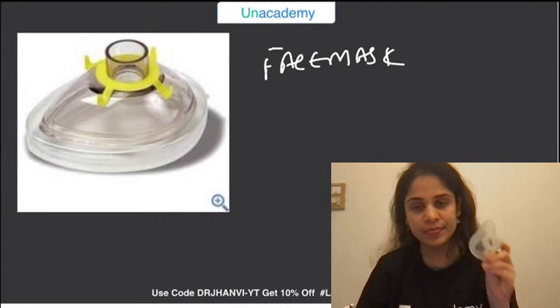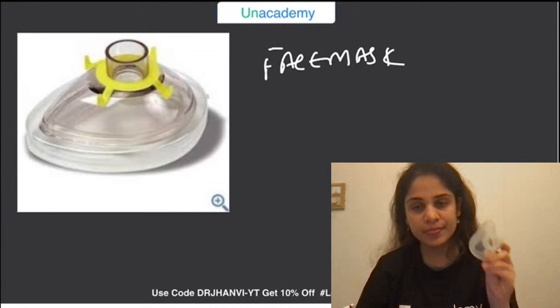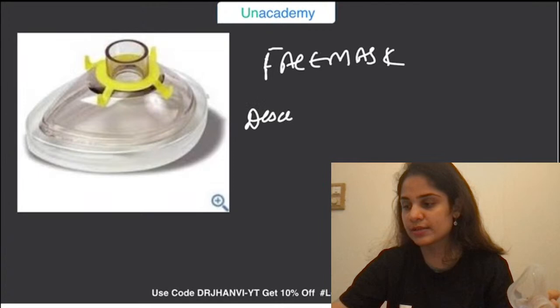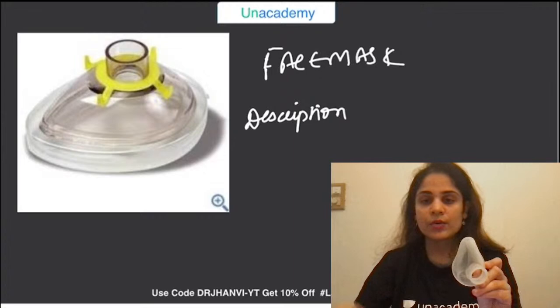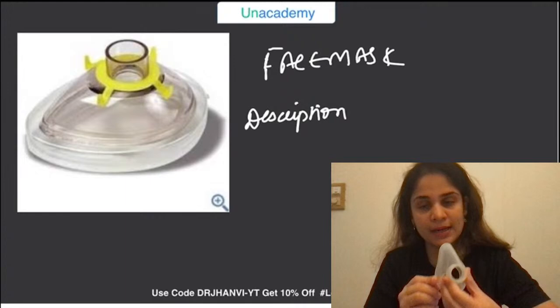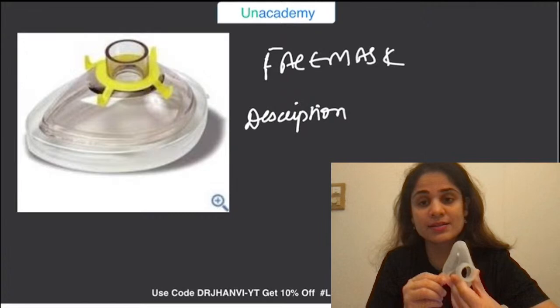So first, identification: it is a face mask. The second thing is description. We are going to say that this is a transparent face mask. It is made up of medical grade silicone. It can also be made up of other materials like rubber and can come in different colors, especially black. The most commonly used face mask is the transparent face mask.